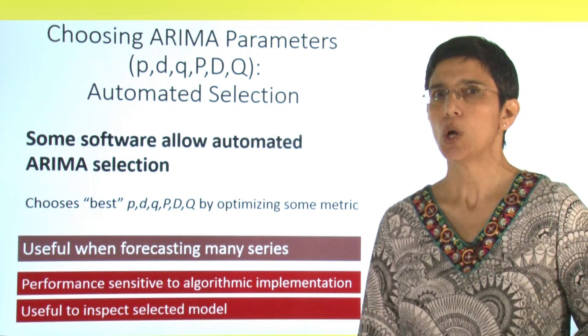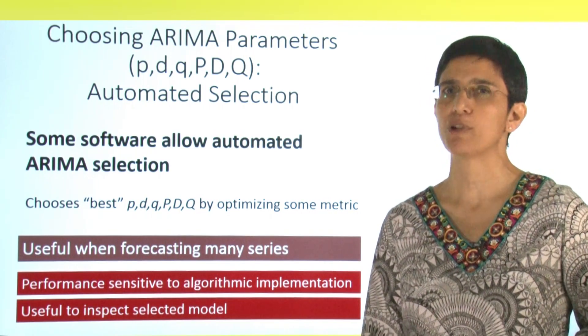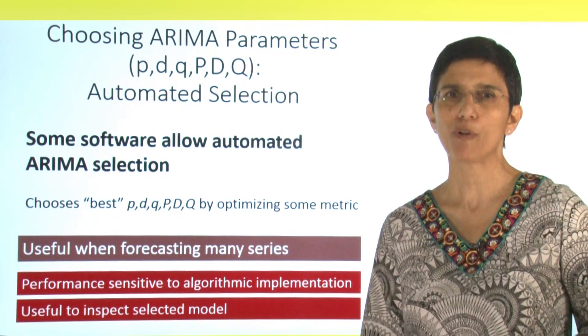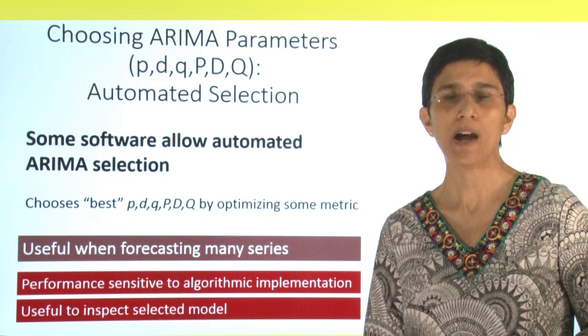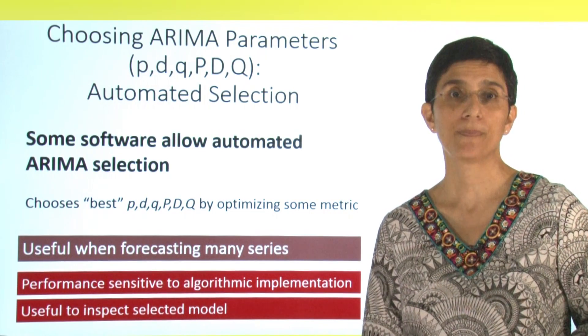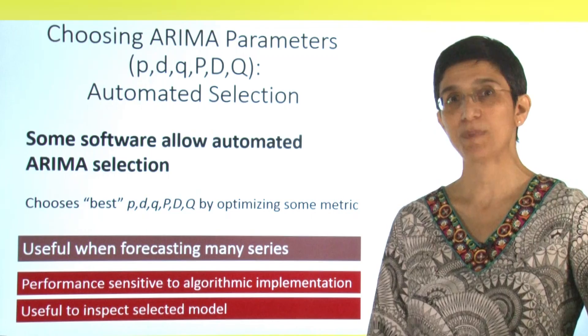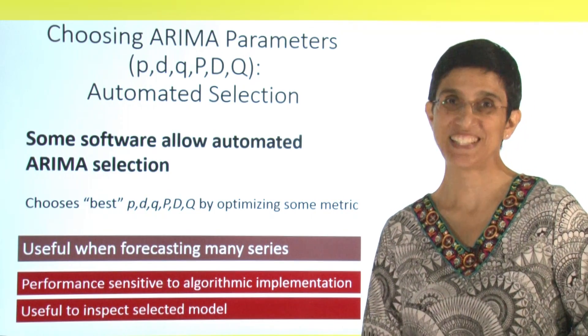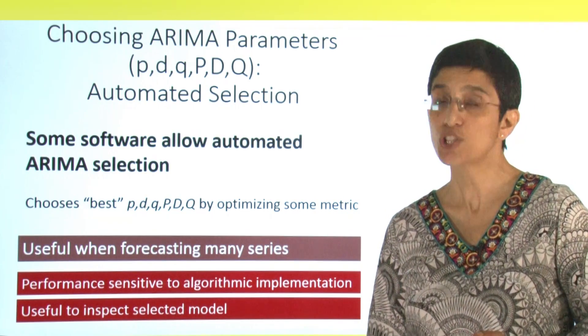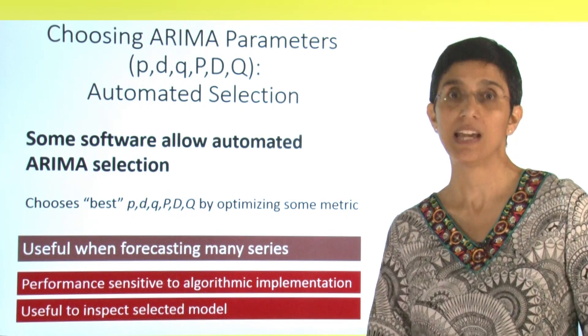The issues are that different software will give you slightly different results because the performance is very sensitive to how you implement the algorithm. So it's always useful to inspect which model was automatically selected by the software and check what exactly it chose and why.